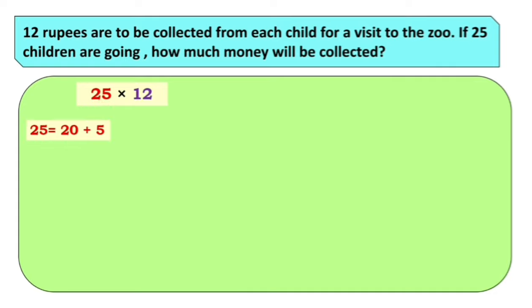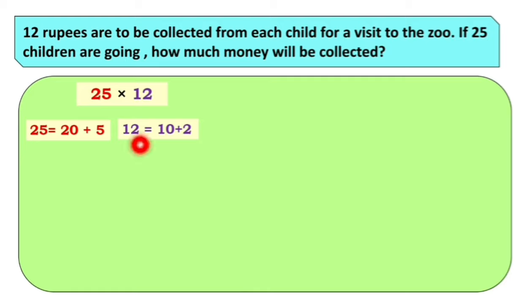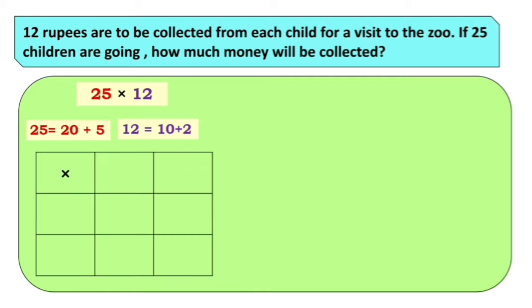25 is equal to 20 plus 5. Aata ha 12 haa multiplier aahe. So 12 cha suddha expanded form apan write karunga. 12 cha expanded form kaa aahe? 10 plus 2. Chala tar mula no, aata apan multiplicant aani multiplier boxes madhe write karunga. 25 cha expanded form aahe 20 plus 5.